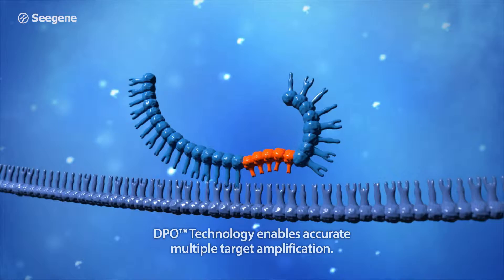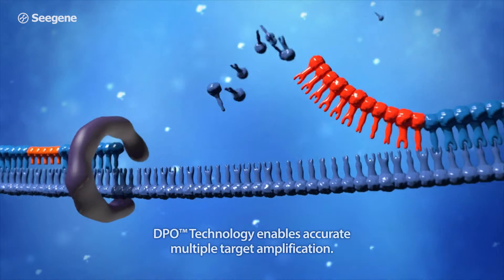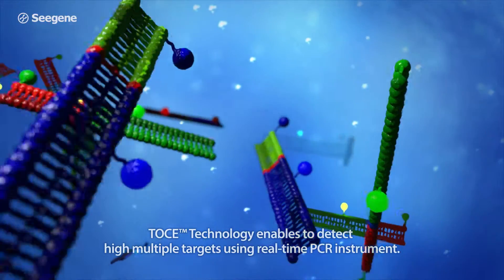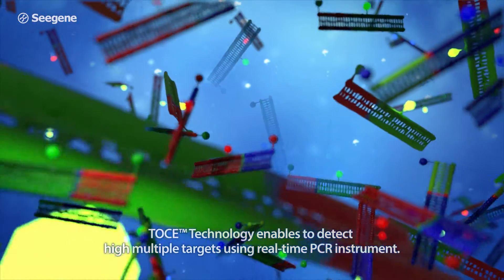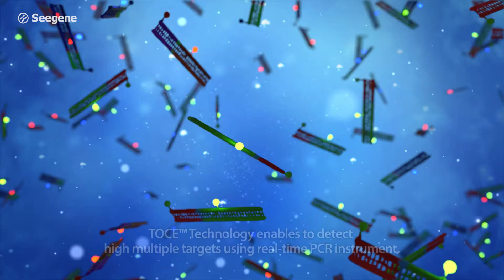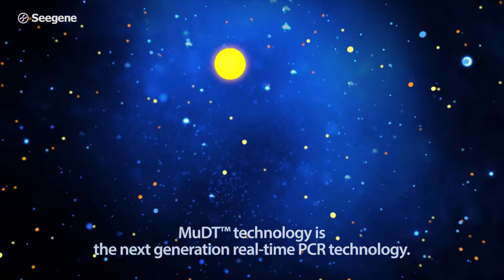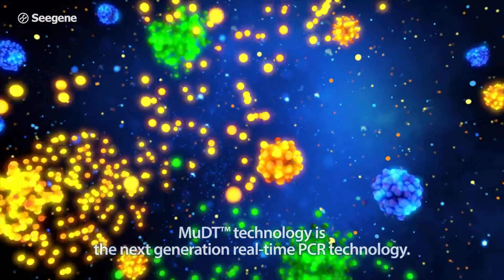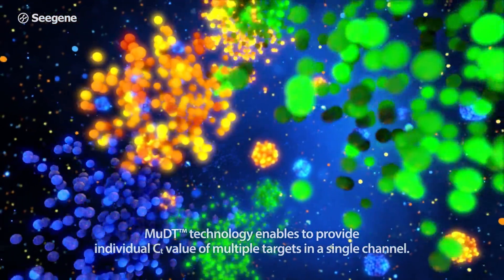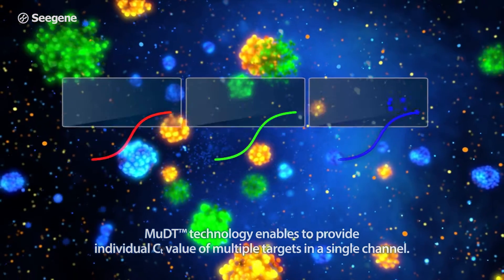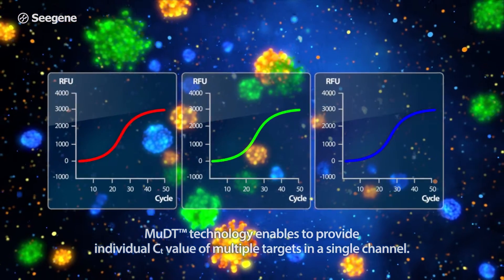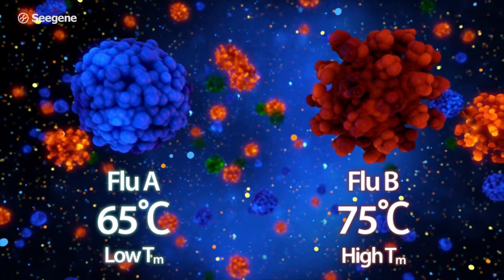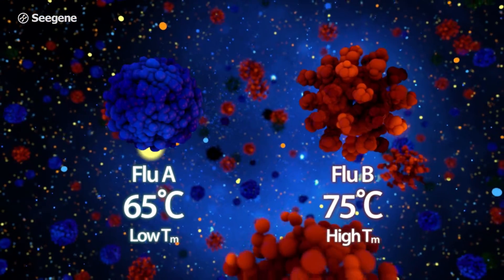Cgene is also the company behind DPO technology, providing superior multiplex PCR, and Toast technology for establishing arbitrary melting temperatures to identify targets. MUDT technology is the next-generation real-time PCR technology. The MUDT algorithm measures fluorescence intensity at multiple temperatures using DPO and Toast technology-enabled assays. This technology combination paves the way for CT measurement of multiple targets in a single channel.